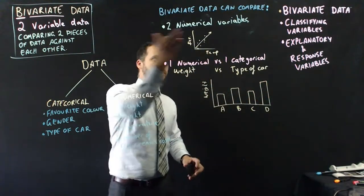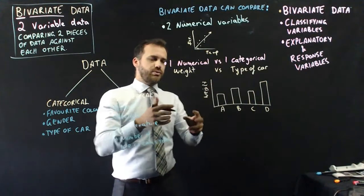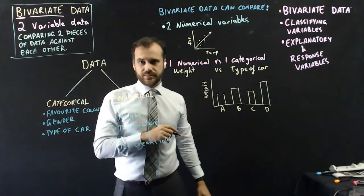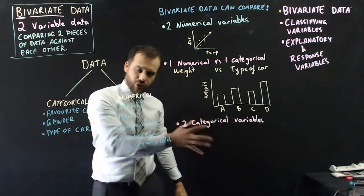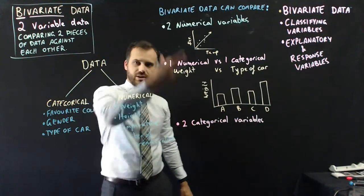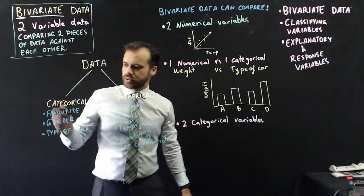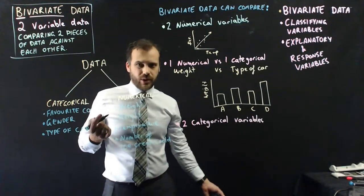So we've got two numerical variables being compared against each other. We have one numerical versus one categorical. But we could also do this - we could compare two categorical variables. And these are the three things that we can do.